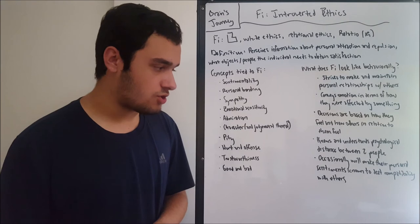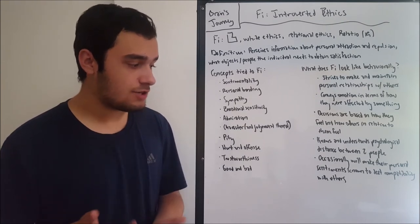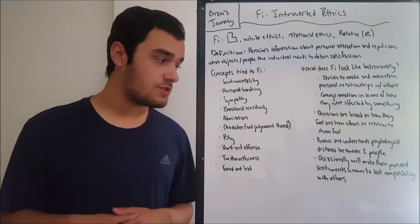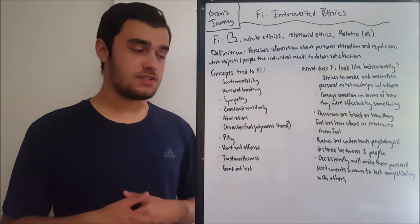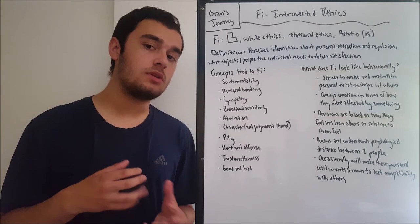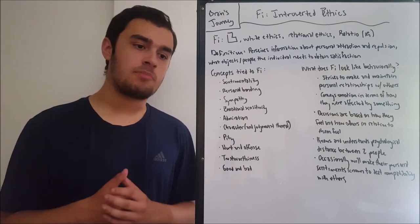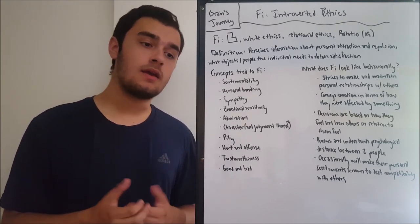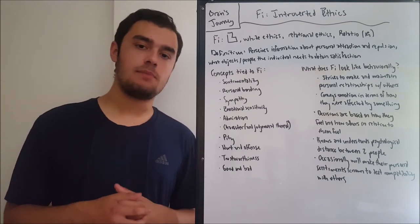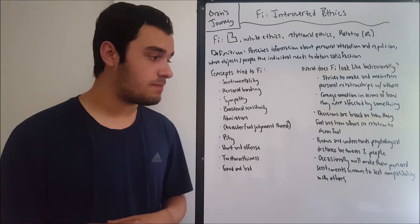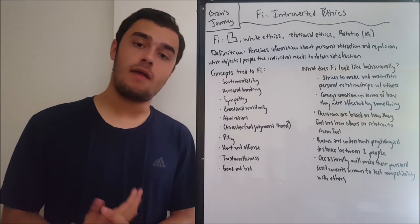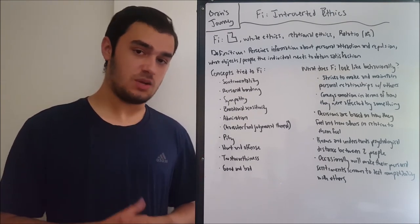The last behavioral trait is that FI will occasionally make personal sentiments known in order to judge compatibility with others. This ties into psychological distance: if FI lets people know a little of who it is, what it values, and what it needs, then if they respond in kind, it will have made a friend — somebody it can depend on for stimulation and satisfaction. FI lets these personal sentiments be known in order to receive feedback it will judge as either good or bad.